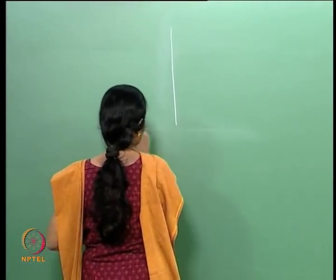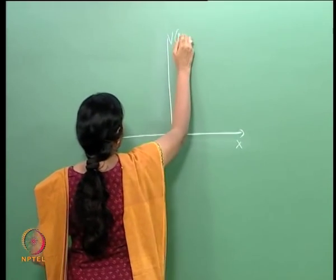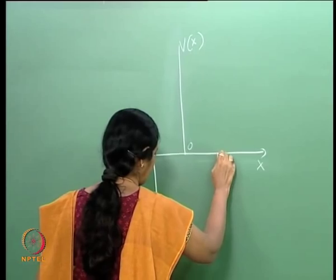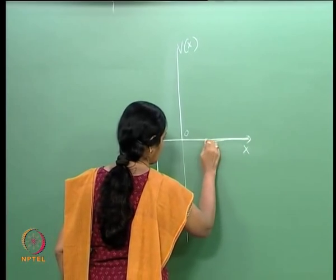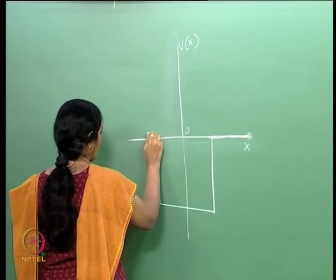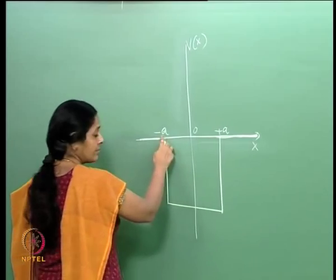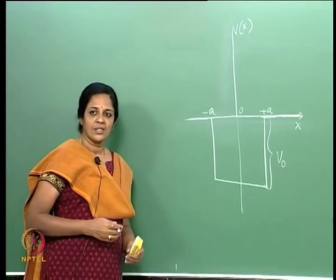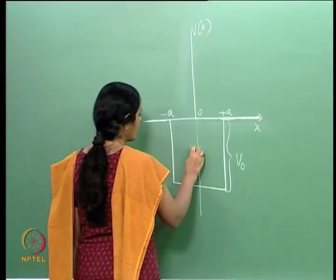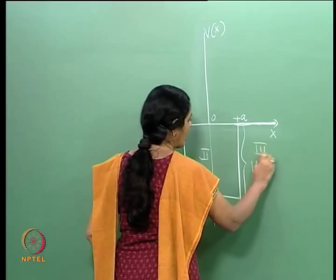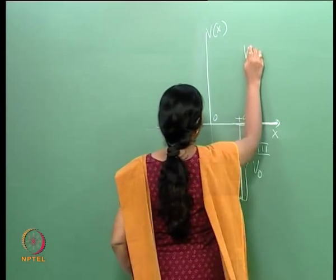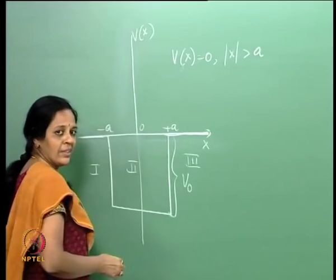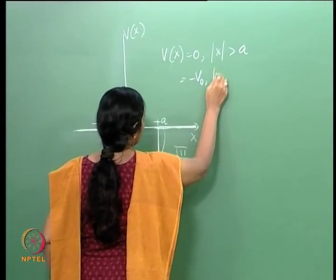We had this square well potential — V of x versus x. In the negative region, you had this square well. Out at minus a and plus a, the well began. The potential itself was minus V naught, where V naught is a positive quantity. This was in region 2, which is inside the well. There were regions 1 and 3 outside the well. The square well potential was 0 for |x| greater than a, and minus V naught for |x| less than a.